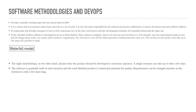In the waterfall method, software is developed in a top-down fashion — hence the name waterfall, from top to bottom. Once a phase is complete, there is no way to go back to it. For example, once the requirements phase is over and the design phase starts, you cannot add or remove a requirement. You will have to wait until the whole operation is finished and then start over. The iteration in this model could take up to two years until a product is ready.